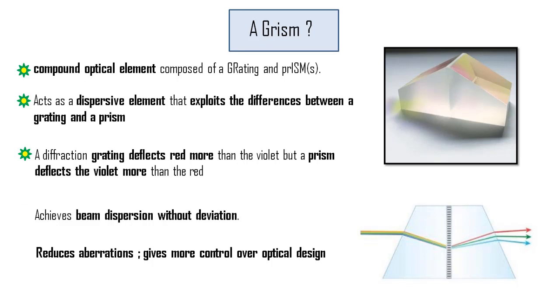Due to a combination of these behaviors, these setups achieve beam dispersion without deviations and are used in very powerful imaging systems. A grism reduces aberrations and gives much more control over optical designs.